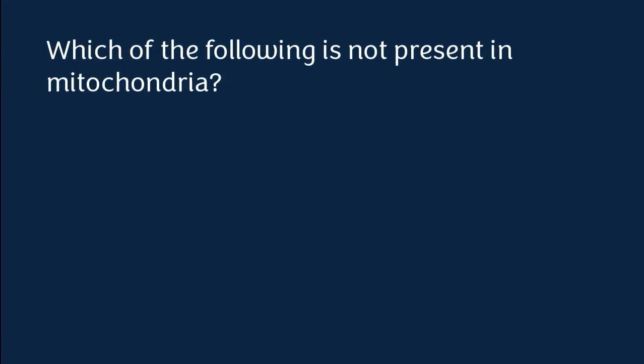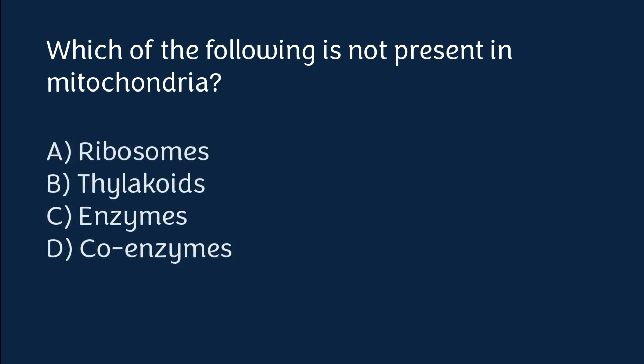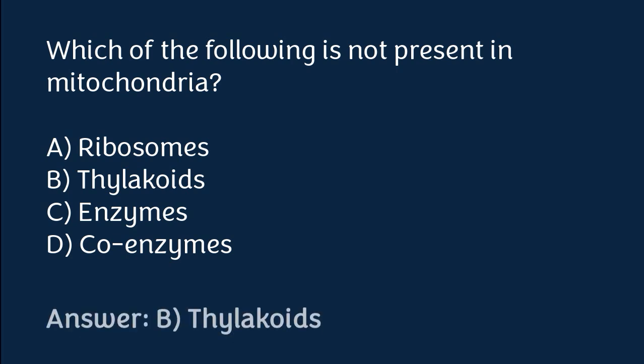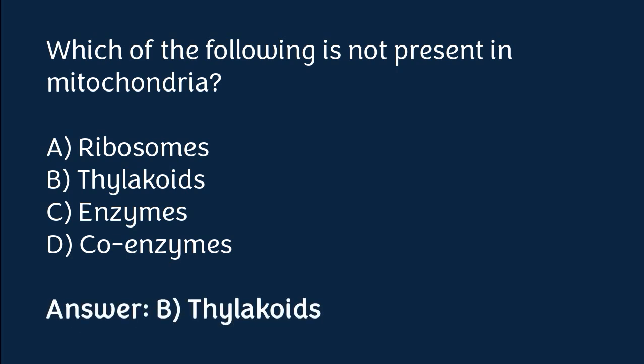Which of the following is not present in mitochondria? Ribosomes, thylakoids, enzymes, or coenzymes. The correct answer is option B. Thylakoids are not present in mitochondria.